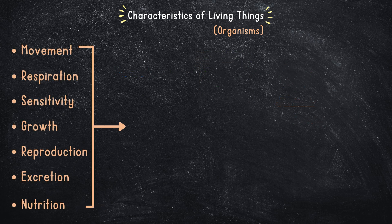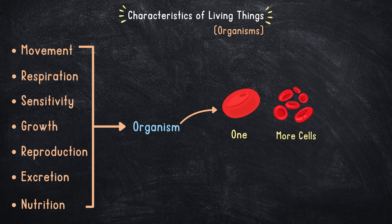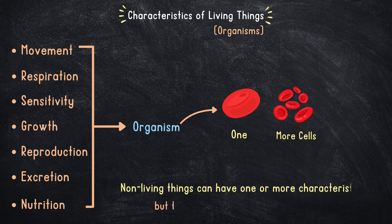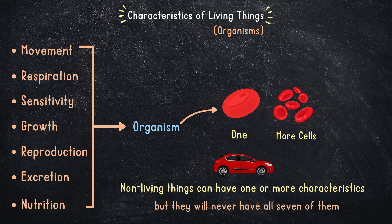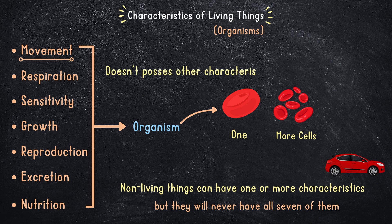So all those having these seven characteristics can be called an organism. One other thing that all living organisms have in common is that they're made up of one or more cells — we will cover cells in depth in upcoming videos. Do note that non-living things can have one or more characteristics from this list, but they will never have all seven. For example, a car can move, but it doesn't possess the other characteristics.